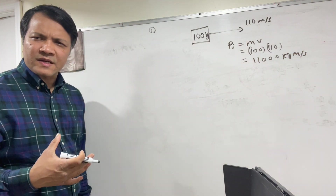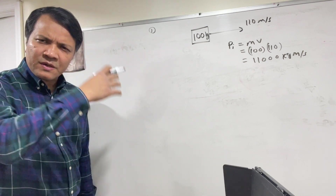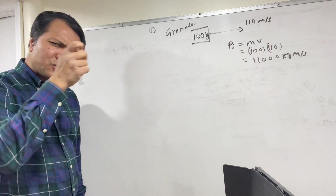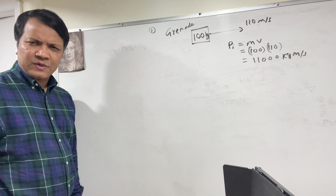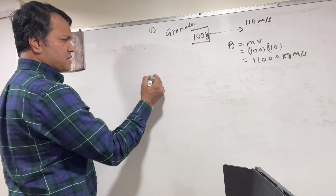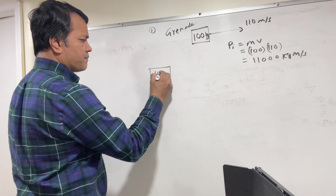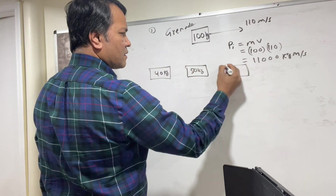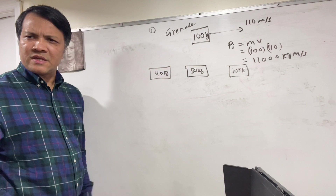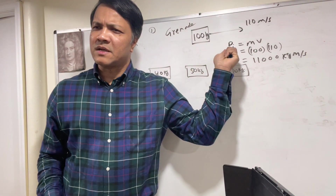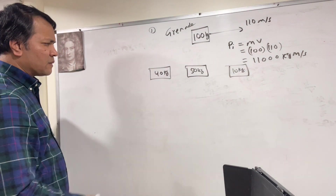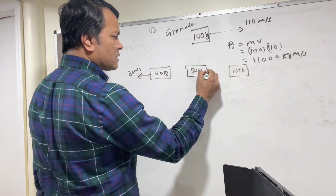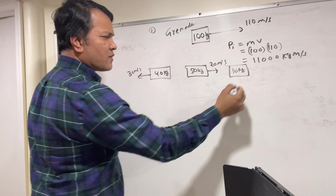All of a sudden, you shoot a bullet at the granite and the granite breaks into 3 pieces: piece 1 is 40 kg, piece 2 is 50 kg, and piece 3 is 10 kg. Note the conservation of mass: 40 + 50 + 10 = 100. Piece 1 moves at 30 m/s, piece 2 moves at 20 m/s, and you have to find the velocity of piece 3.